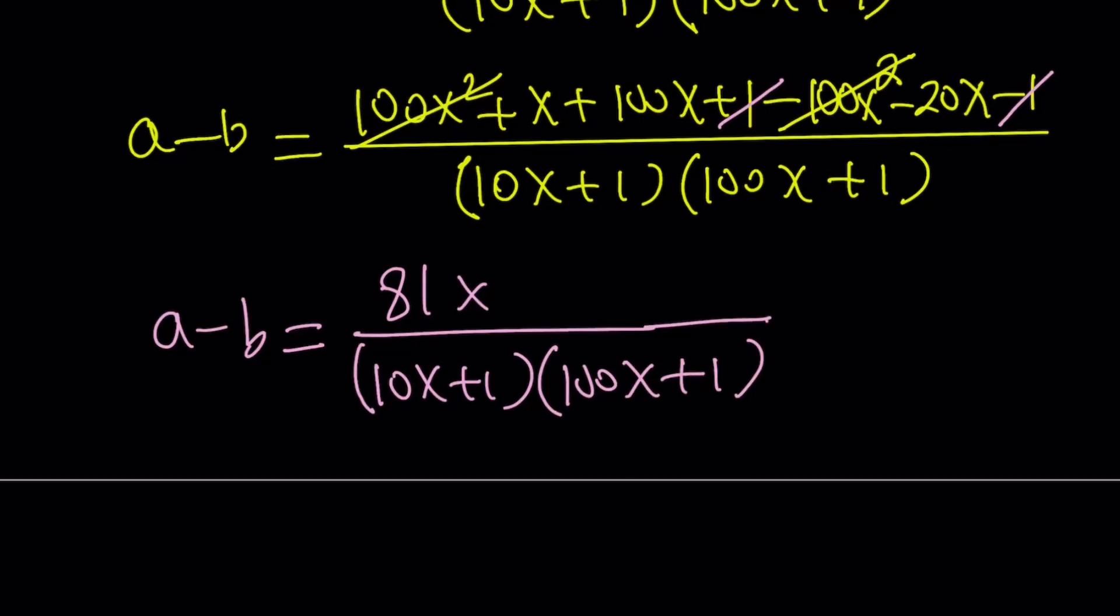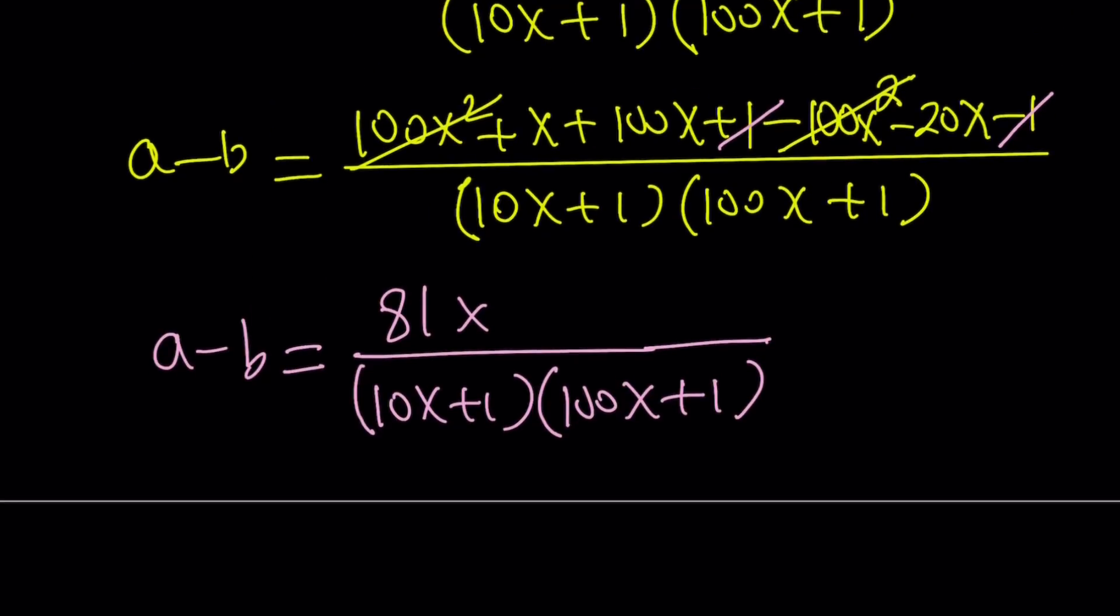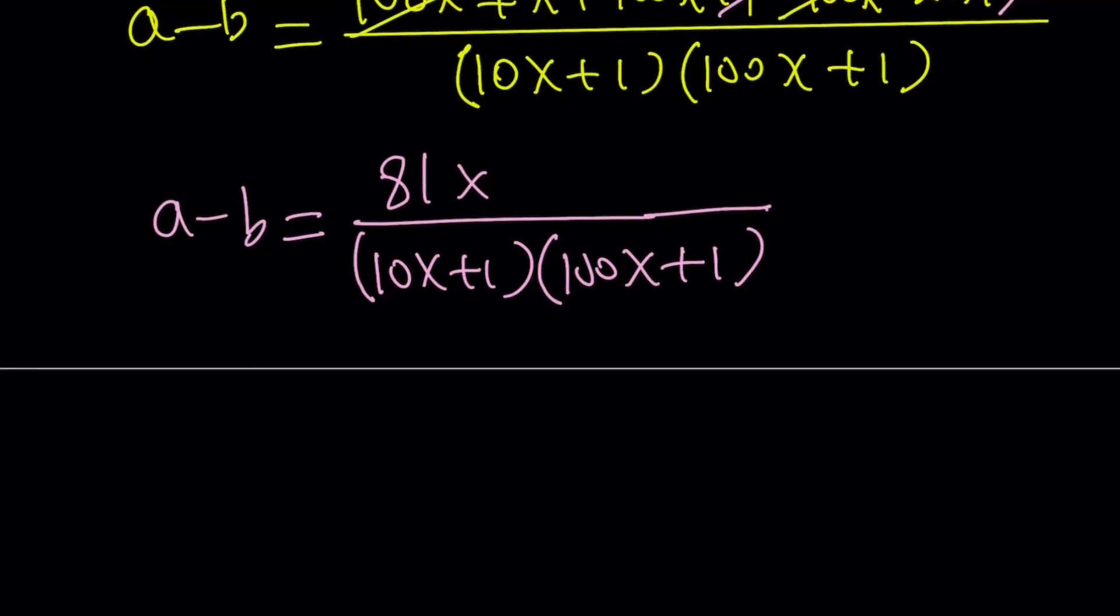And remember, a minus b, if a minus b is positive, a is greater than b. Otherwise, a is less than b. Of course, a and b are not equal. We know that, right? There's no way this can be zero unless x is zero. And we know that x is not equal to zero because x is 10^22. So it's not zero. So is this a positive quantity or a negative quantity? And how can I tell?